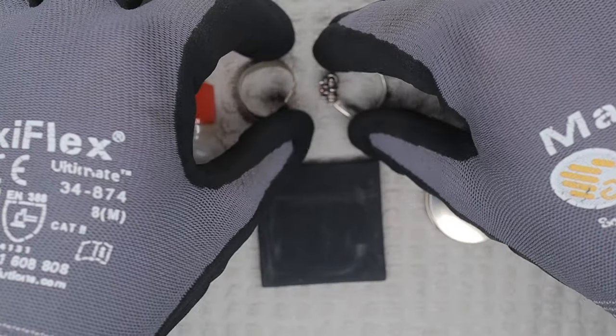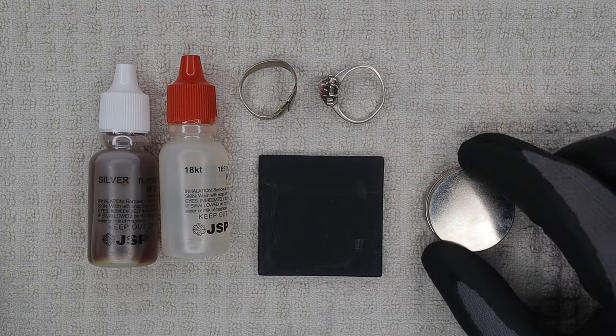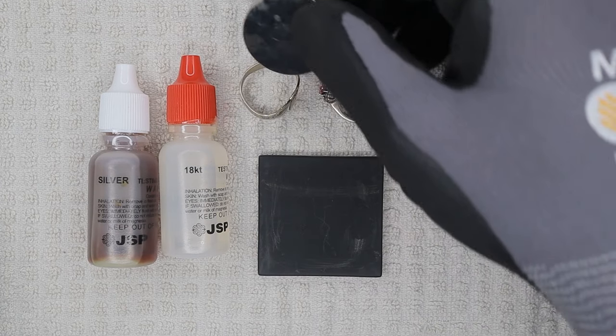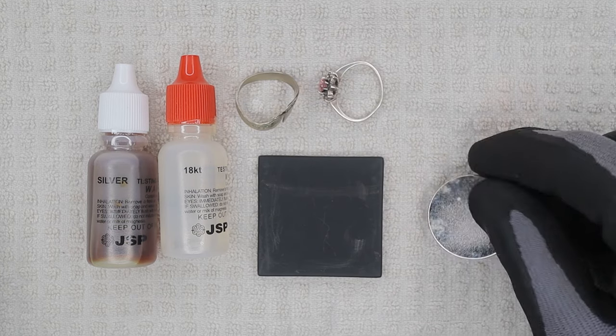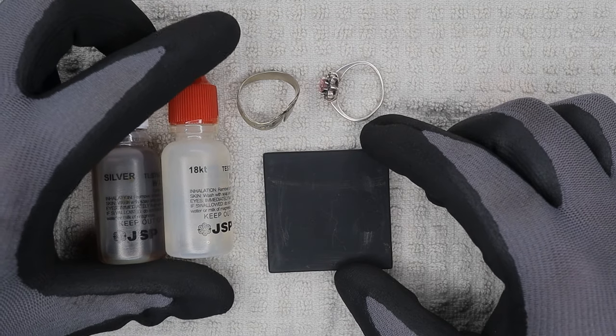First thing first, we're going to take our magnet and see if they're magnetic so we can rule out any type of steel. That's a good sign. Set the magnet off to the side.